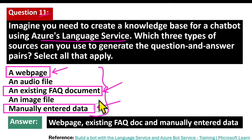The third source is manually entered data. Additionally, you can manually input the question and answer pairs into the knowledge base. You cannot directly use an image or an audio file to import a knowledge base — that is not possible.